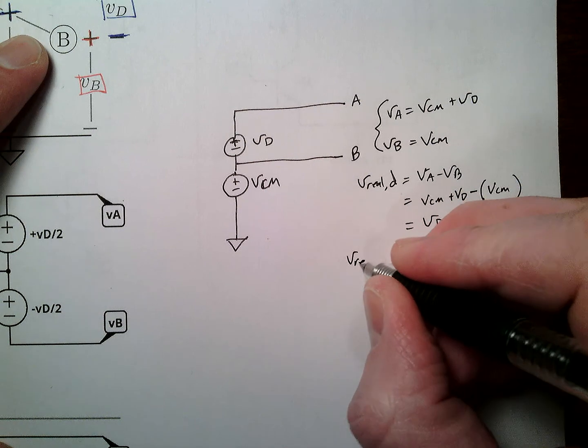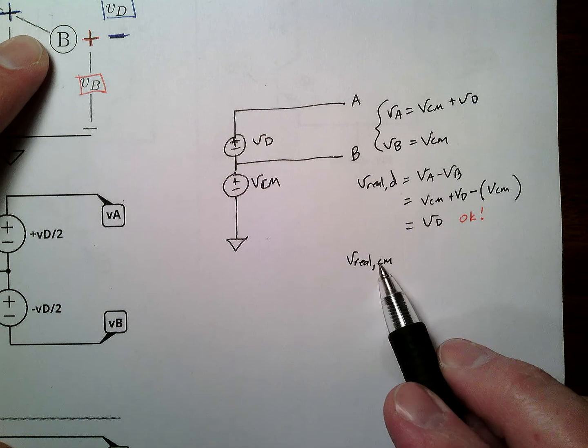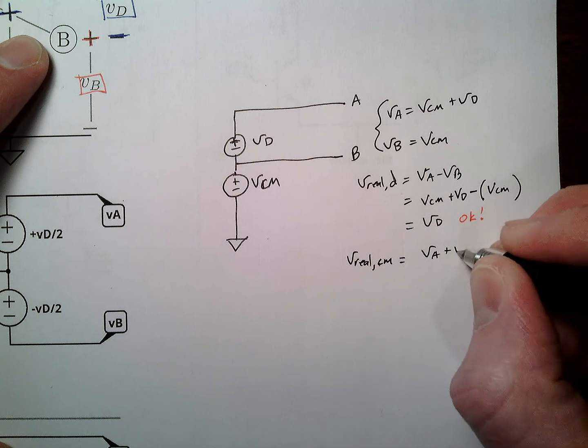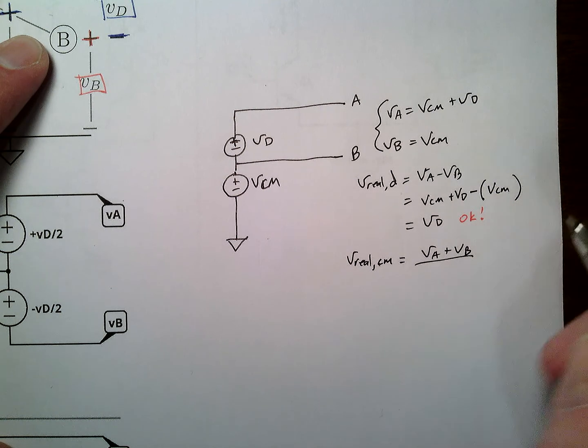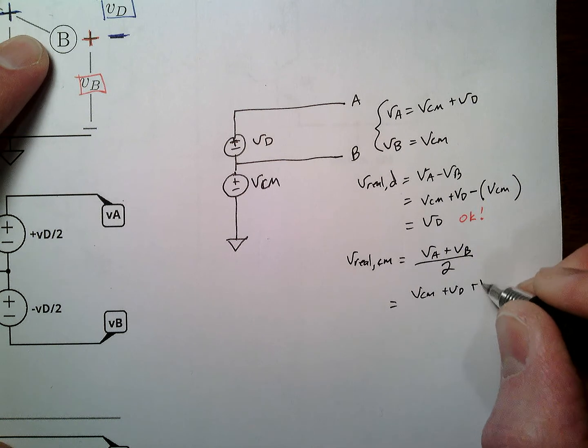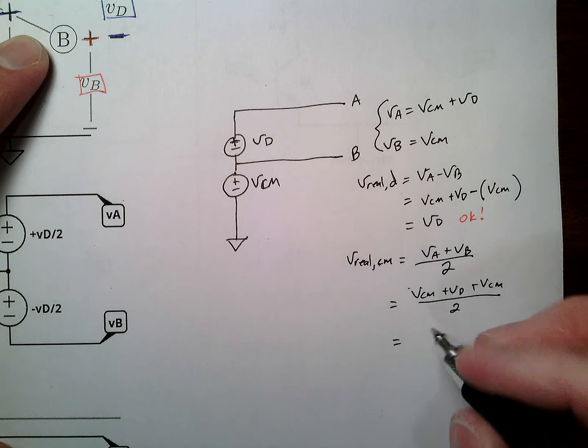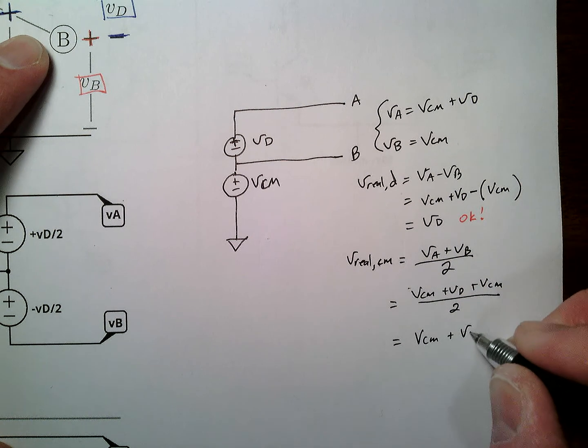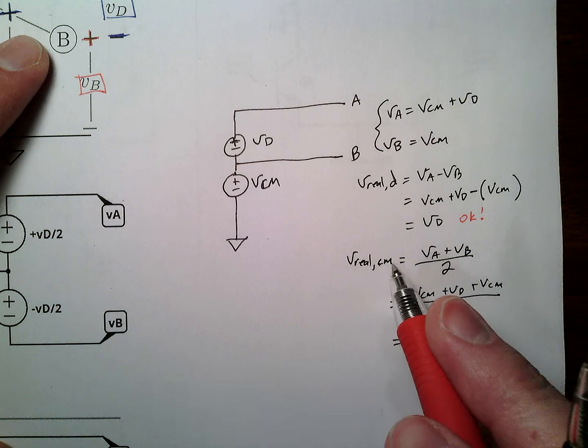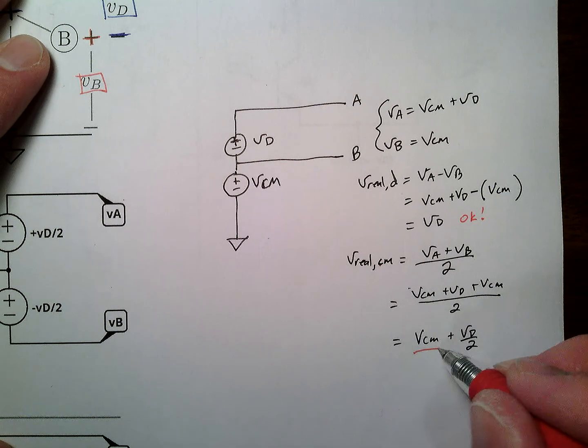Here's where it goes wrong. V real common mode, do you see how this was labeled common mode? The definition, we always need to go remember what our definitions are, is VA plus VB over 2, just the arithmetic mean. Plug those in. We get VCM plus VD plus VCM over 2, and that is 2 VCM, so we get VCM plus VD over 2.